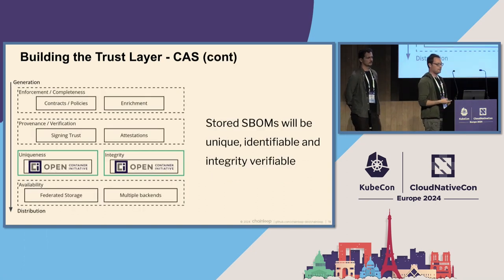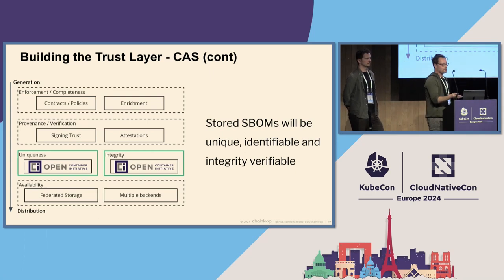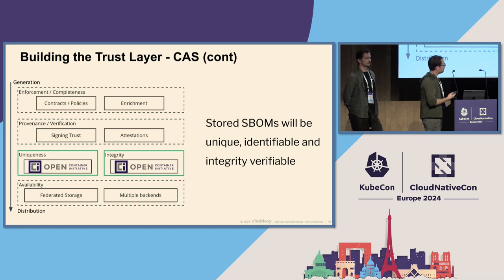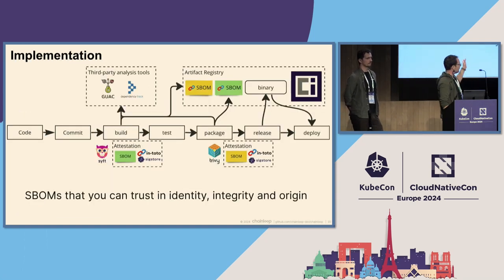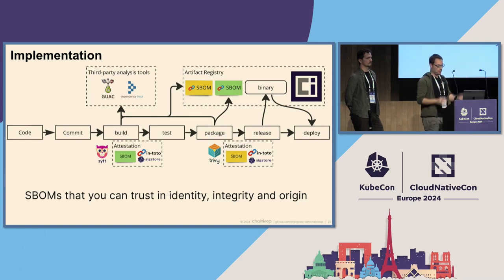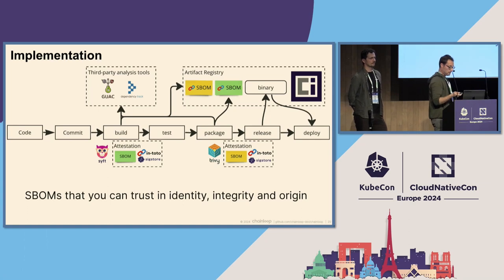The good news is there is a container storage solution we use every day: an OCI registry. We can use OCI to store SBOMs, and that will give us the unique and identifiable properties. Going back to our pipeline, we could technically create an attestation, wrap the SBOM in it, and store that signed attestation in an OCI registry. So we'll get SBOMs that you can trust in identity, integrity, and origin.